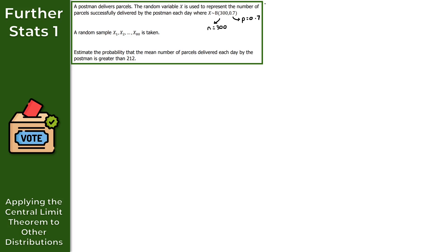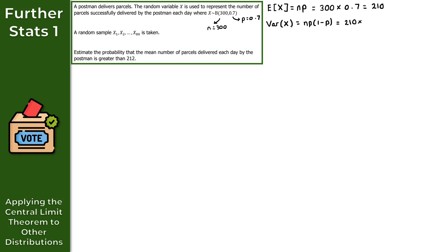Since X is binomially distributed, we use the formulas E(X) = np and Var(X) = np(1 − p). So E(X) = 300 × 0.7 = 210. For the variance: Var(X) = 210 × (1 − 0.7) = 210 × 0.3 = 63. Now we have the mean and variance and can apply the central limit theorem.